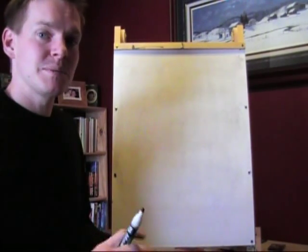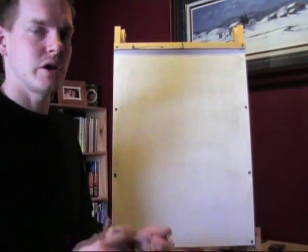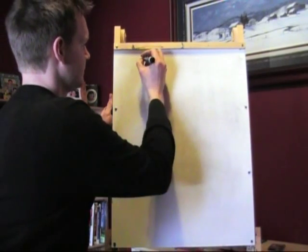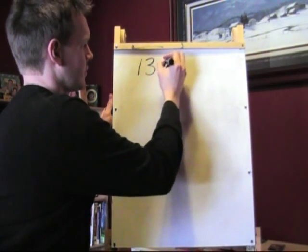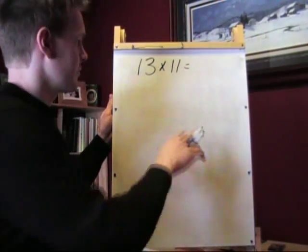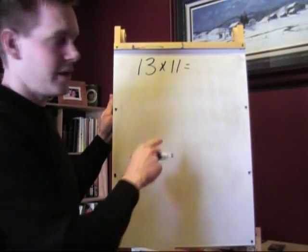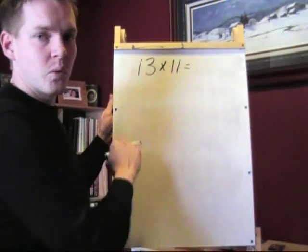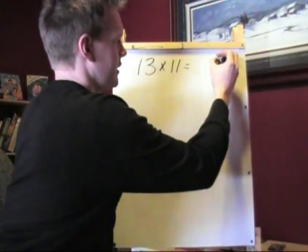But there's a trick that you can use for multiplying 11 times a larger number, and I'm going to show you right here. The trick goes like this. You take your first number, 13, and you'll take the number in the ones column, the 3. Just write it down.